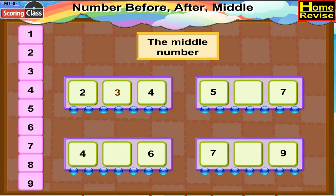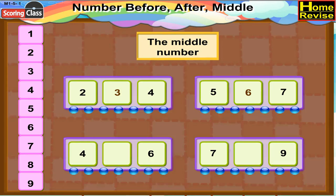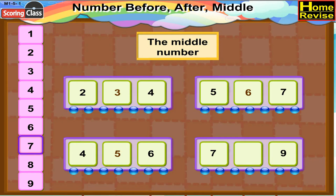Now the next is 5 and 7. What comes between 5 and 7? Right, it is number 6, so write 6 in the block as it is the middle number. Now, what is the middle number between 4 and 6? Well, it is 4, 5, 6, so the middle number is 5. What is the middle number between 7 and 9? If you count, it is 7, 8, 9. So the middle number is 8.